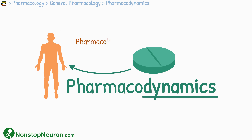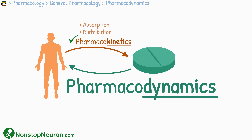In previous lectures, we talked about pharmacokinetics. That was the study of what the body does to the drug — it included absorption, distribution, metabolism, and excretion of the drug by the body. Opposite to this, pharmacodynamics is the study of what a drug does to the body.